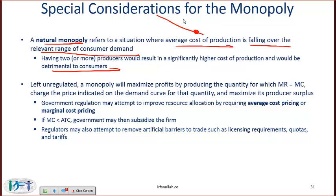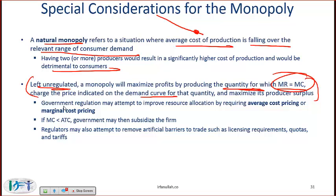Left unregulated, a monopoly will maximize profits by producing the quantity for which marginal revenue equals marginal cost, then charge the price indicated on the demand curve for that quantity and maximize its producer surplus. As always, MR equals MC for profit maximization. Government regulation may attempt to improve resource allocation by requiring average cost pricing or marginal cost pricing.